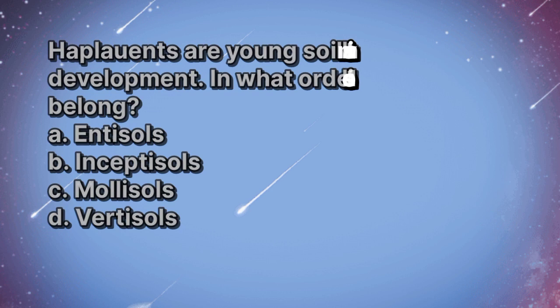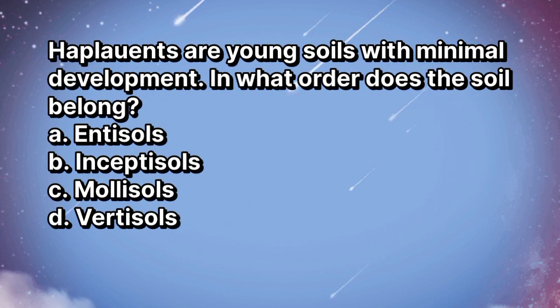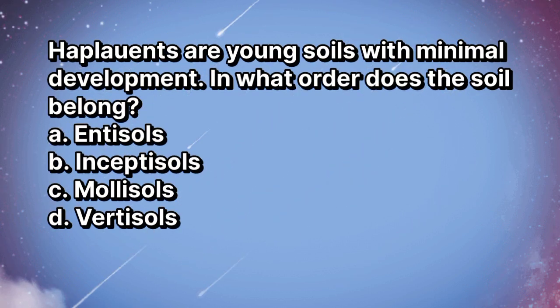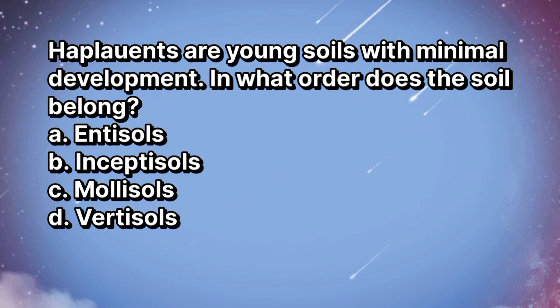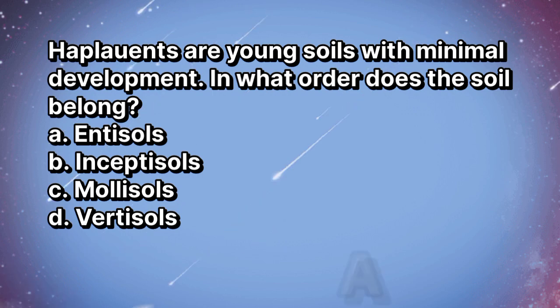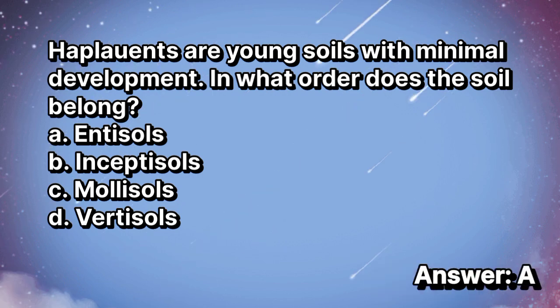Haplowants are young soils with minimal development. In what order does this soil belong? A. Entisols. B. Inceptisols. C. Mollisols. D. Vertisols. The answer is letter A.